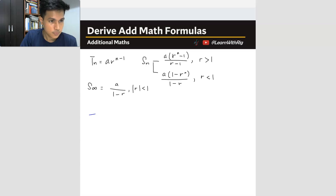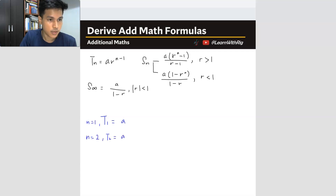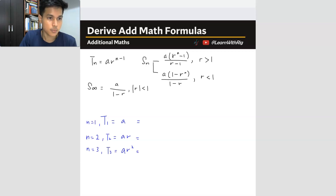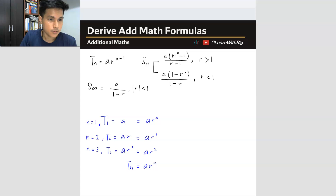We start off with the Tn formula. Similar to arithmetic, we go one by one. When n equals 1, T1 equals A. When n equals 2, T2 equals A times R. When n equals 3, T3 equals A times R squared. Writing in terms of the formula: T1 is A times R to the power of 0, T2 is A times R to the power of 1, T3 is A times R squared. So for any n, Tn equals A times R to the power of n minus 1. That is the relationship between the n value and the power of R — you just minus 1.